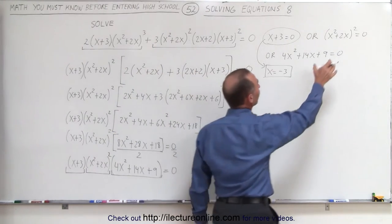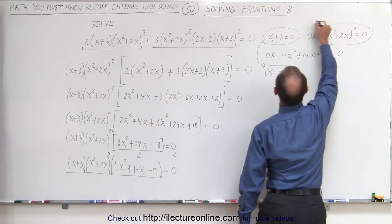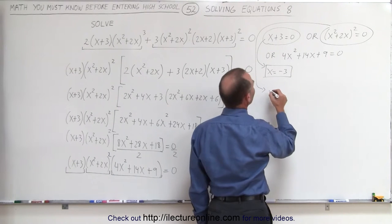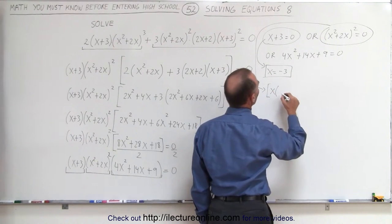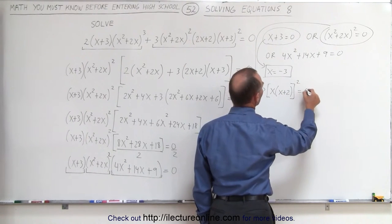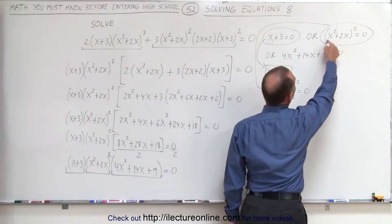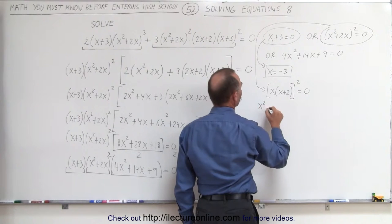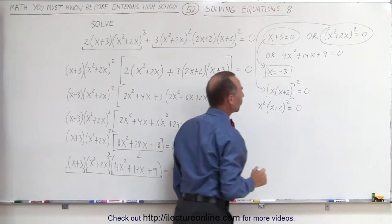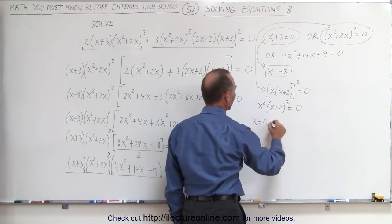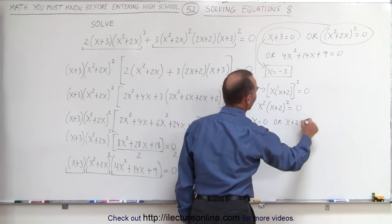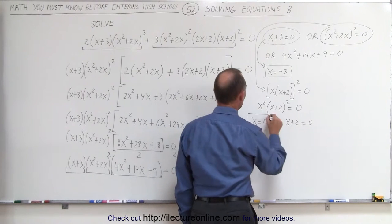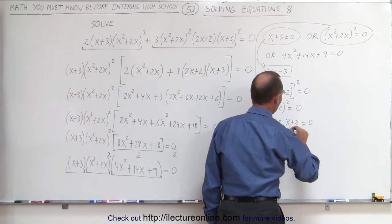The second solution can be gotten by setting x squared plus 2x quantity squared equal to 0. We can write this as x times x plus 2, quantity squared, equals 0. Inside the parenthesis I factored an x but kept it as part of the exponent. This can be written as x squared times x plus 2 squared equals 0, which means either x equals 0, or x plus 2 equals 0. It doesn't matter that it's squared — if this equals 0, then this squared equals 0 as well. So x equals 0 and x equals negative 2 are also solutions.